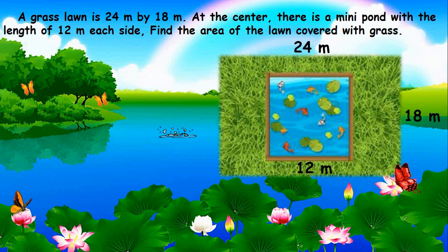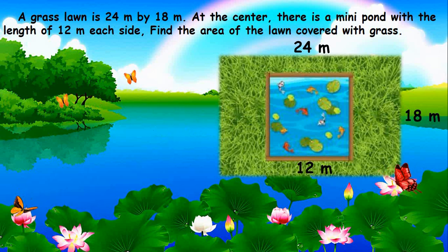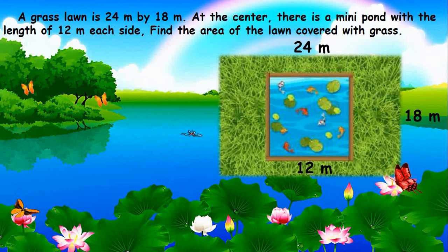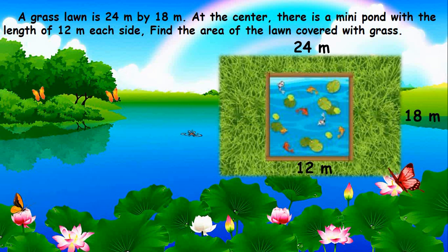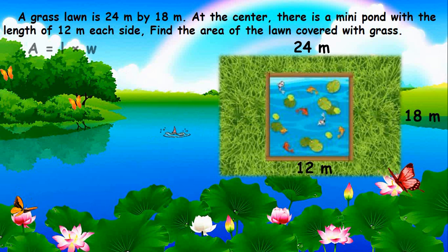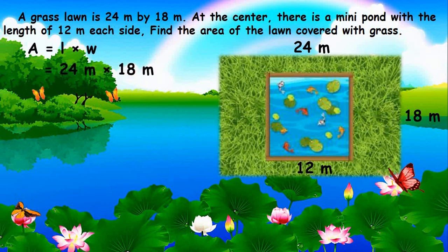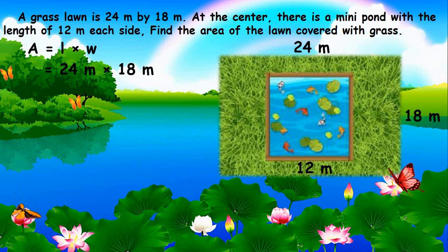All we will look for is the lawn area with grass. What strategy will we use? Let us first get the area of the whole lawn. Since its shape is a rectangle, we will use the formula length times width. So, 24 meters times 18 meters equals 432 square meters, the area of the whole rectangular lawn.